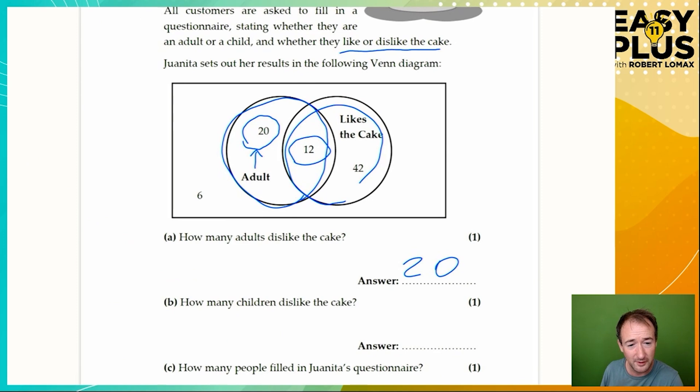How many adults dislike the cake? There are 20 adults here who are not in the likes the cake circle. We can see that they are asked whether they like or dislike the cake without another option, so we can say with some certainty that there are 20 adults who dislike it. How many children dislike the cake? The adults are all within this circle, so everything else must be children. These must be six children who dislike the cake.